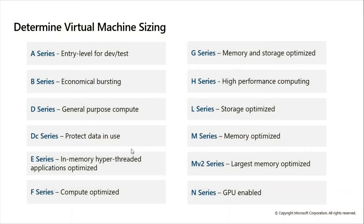The series start like A series, B series, D series, BC series, F series. Each and every series is optimized for a purpose — like compute optimized, memory optimized, and storage optimized. You have to choose based on your project requirement.